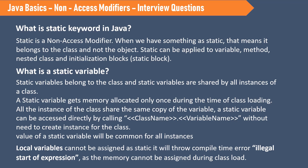The first question is: what is static keyword in Java? Static means it is a non-access modifier. When we declare something as static, that means it belongs to a class and not to an object. That means we can access that variable or method directly without creating an object. Static keyword can be applied to a variable, method, nested class, and initialization blocks or static blocks.